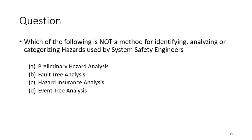Question: Which of the following is not a method for identifying, analyzing, or categorizing hazards used by the system safety engineer? Preliminary hazard analysis, fault tree analysis, and event tree analysis are all valid methods. Hazard insurance analysis is just a made-up term.